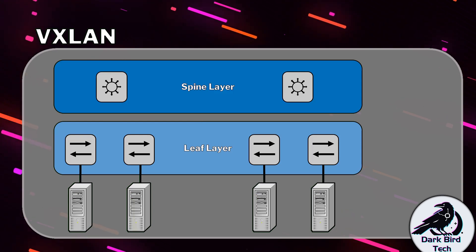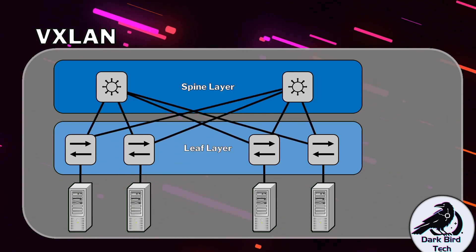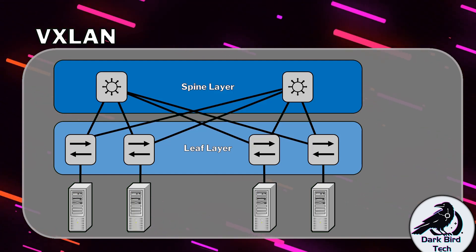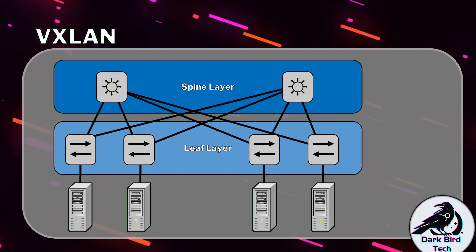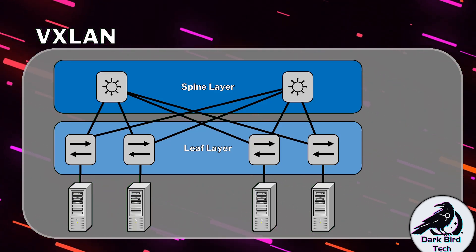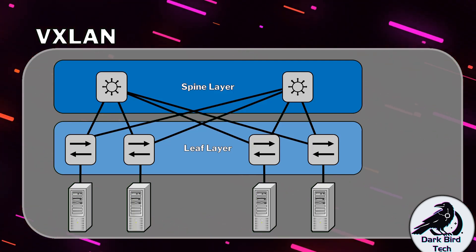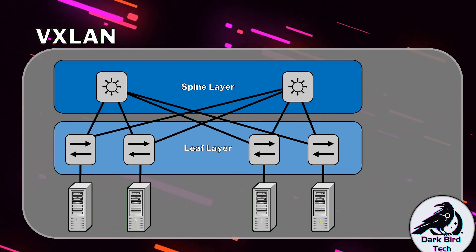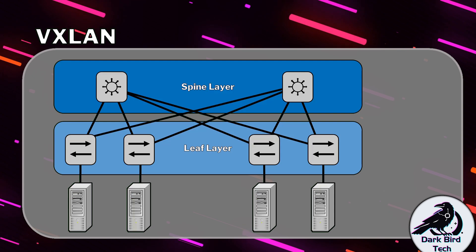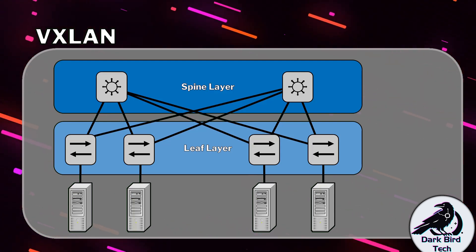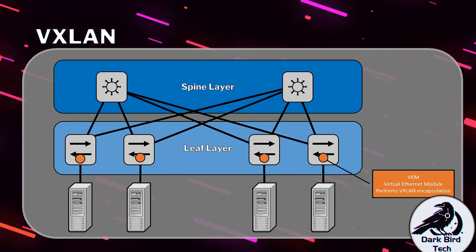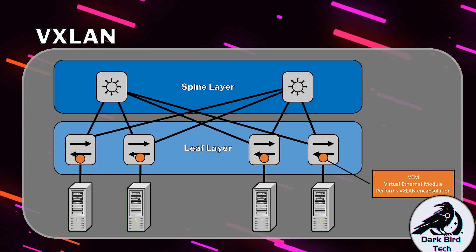Considering we're using a data center as an example here, we're probably going to use a lot of redundancy — basically allowing every switch at the leaf layer to connect to another leaf layer switch by going through at most one spine layer switch. So we are keeping the amount of physical hops to a minimum, which is nice for performance. We are also going to be wanting to do a bit of IP separation here. VXLANs tend to work very nicely here so we can have both VLAN benefits and routing benefits at the same time. To do this, we are going to have a logical interface called a VEM, or a VLAN Ethernet module, and it is going to be the component that performs the encapsulation and de-encapsulation of the VXLAN traffic.